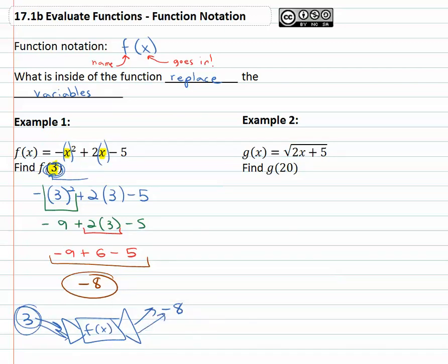So in example 2, we're asked to find g of 20. 20 is inside the function machine, so 20 is what goes into the variable in the expression of g, always in parenthesis when we make a substitution.